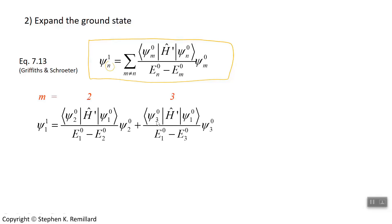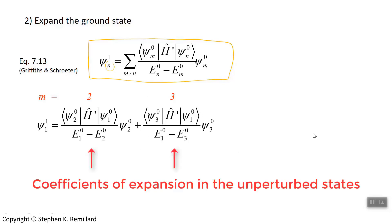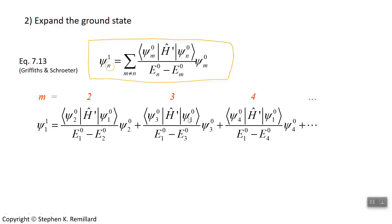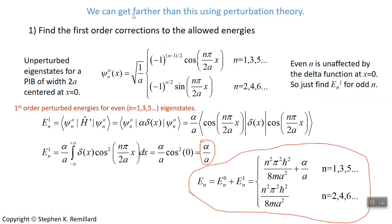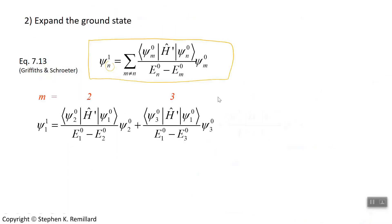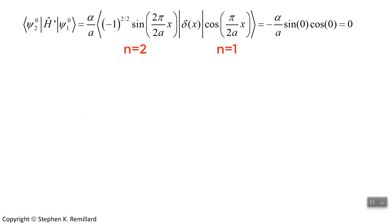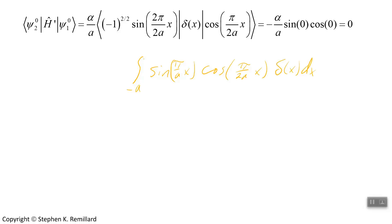The first order wave function begins with m equals 2, because we want to understand the n equals 1 state. This is the first term of the sum — we integrate the second unperturbed state with the perturbation Hamiltonian and the first unperturbed state. Then we go on to the next element in the sum: integrating the third unperturbed state with the first unperturbed state and the perturbation Hamiltonian. These become the coefficients of expansion in the unperturbed states. When n equals 2, your eigenfunction is minus 1 to the 1 times sine of pi over a times x. All of these integrals are very simple to solve because the function is a delta function — it only has value when x equals 0, so the result involves sine of 0 and cosine of 0.